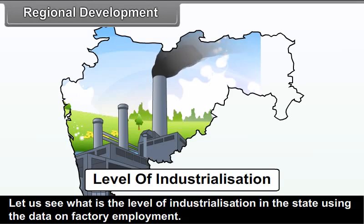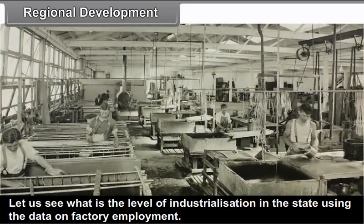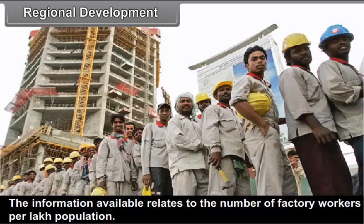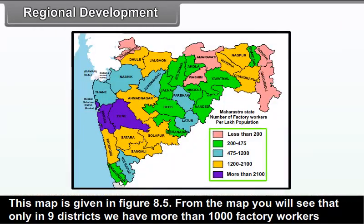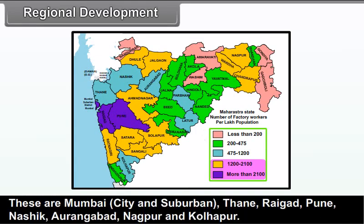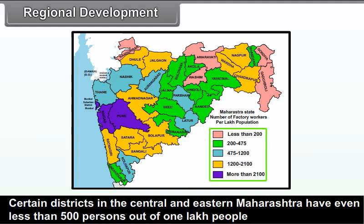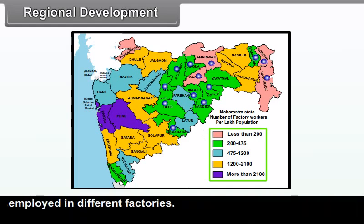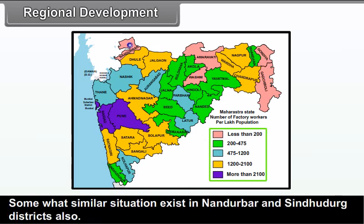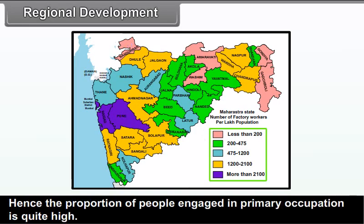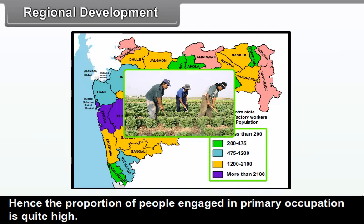The level of industrialization in the state can be assessed using factory employment data — number of factory workers per lakh population (Figure 8.5). Only 9 districts have more than 1,000 factory workers per lakh population: Mumbai City and Suburban, Thane, Raigarh, Pune, Nasik, Aurangabad, Nagpur and Kolhapur. Many districts in central and eastern Maharashtra have fewer than 500 factory workers per lakh. A similar situation exists in Nandurbar and Sindhudurg, where the proportion of people in primary occupation is quite high.